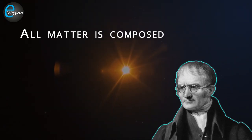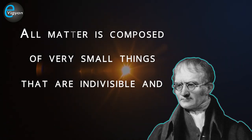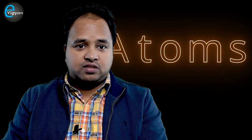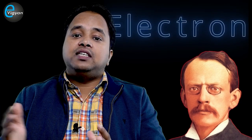Dalton came up with an idea that all matter is composed of very small things that are indivisible and indestructible. He called these particles atoms. But in 1897, the electron was discovered by J.J. Thomson, and after that discovery people realized that atoms are made up of even smaller particles.